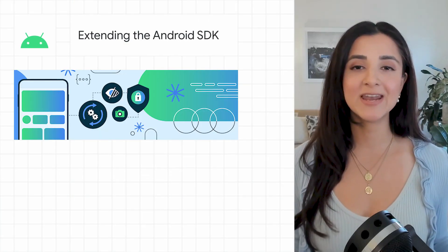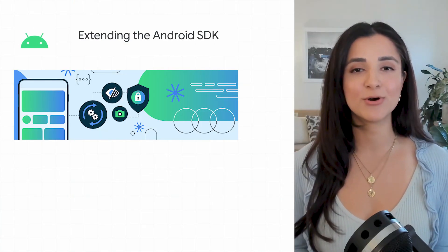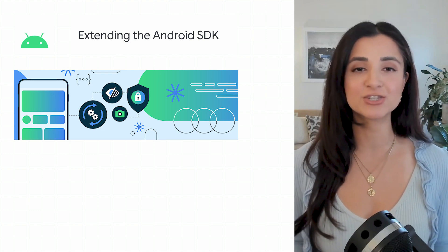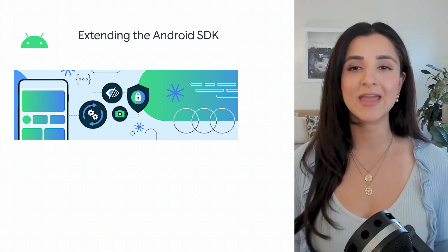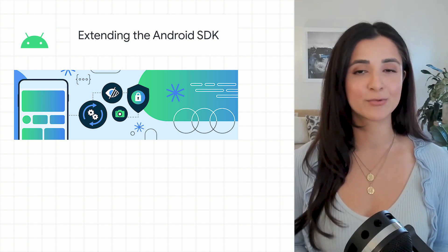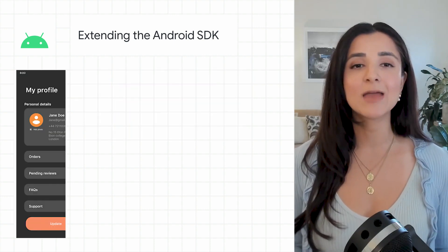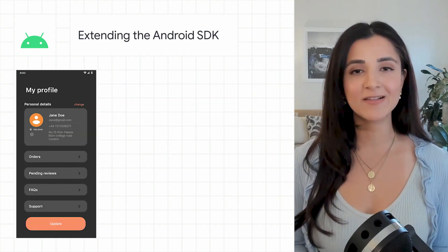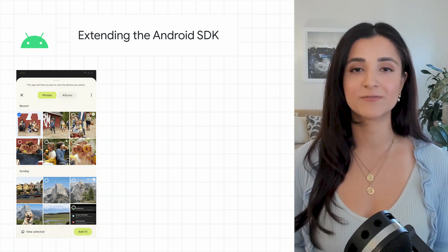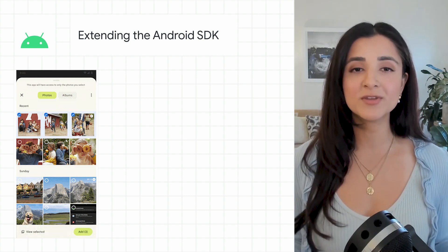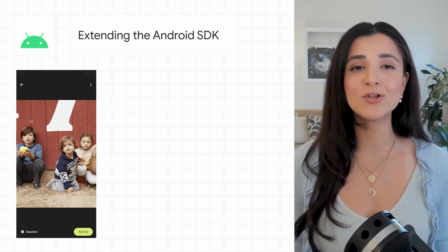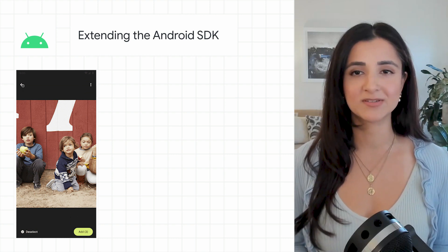Android 10 and higher support modular system components that allow for expedited, functional, and security updates to the Android ecosystem outside of major API-level releases, and make new functionality backward-compatible on already-released Android versions. These improvements help make development more flexible and broaden the reach for app developers.